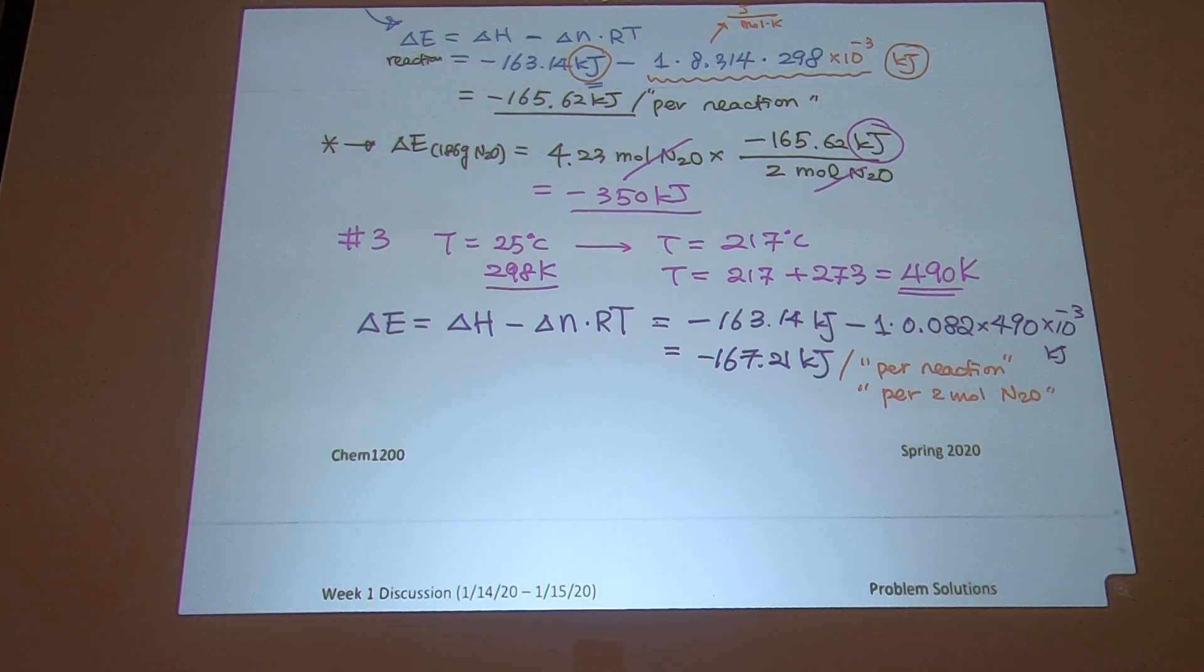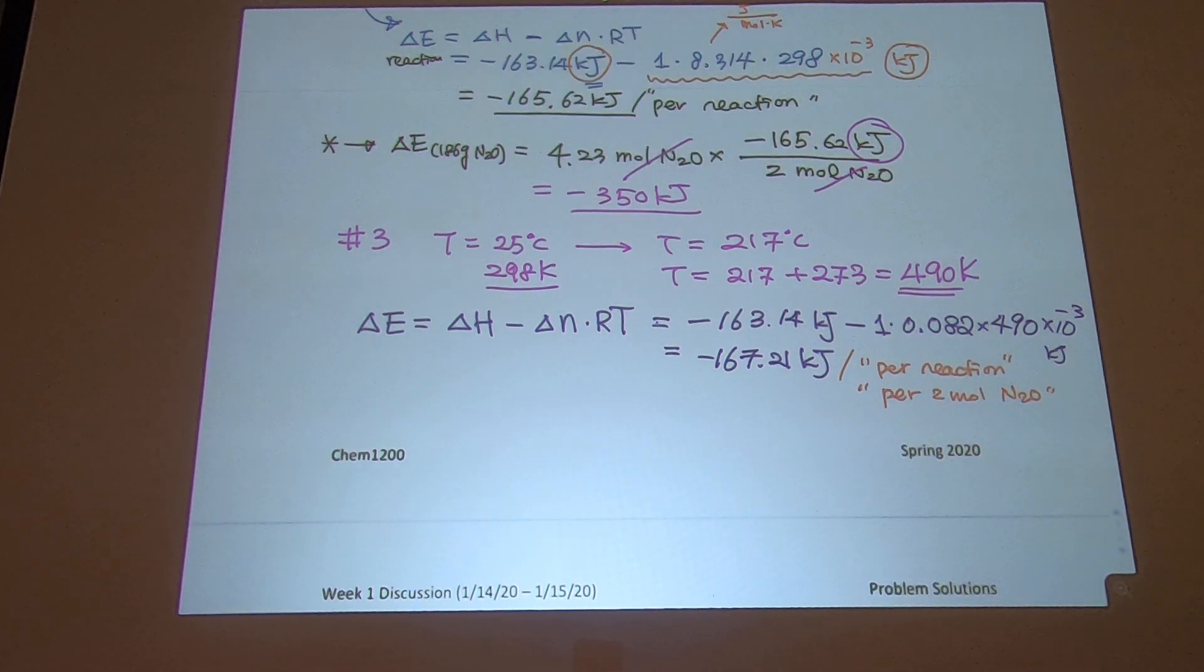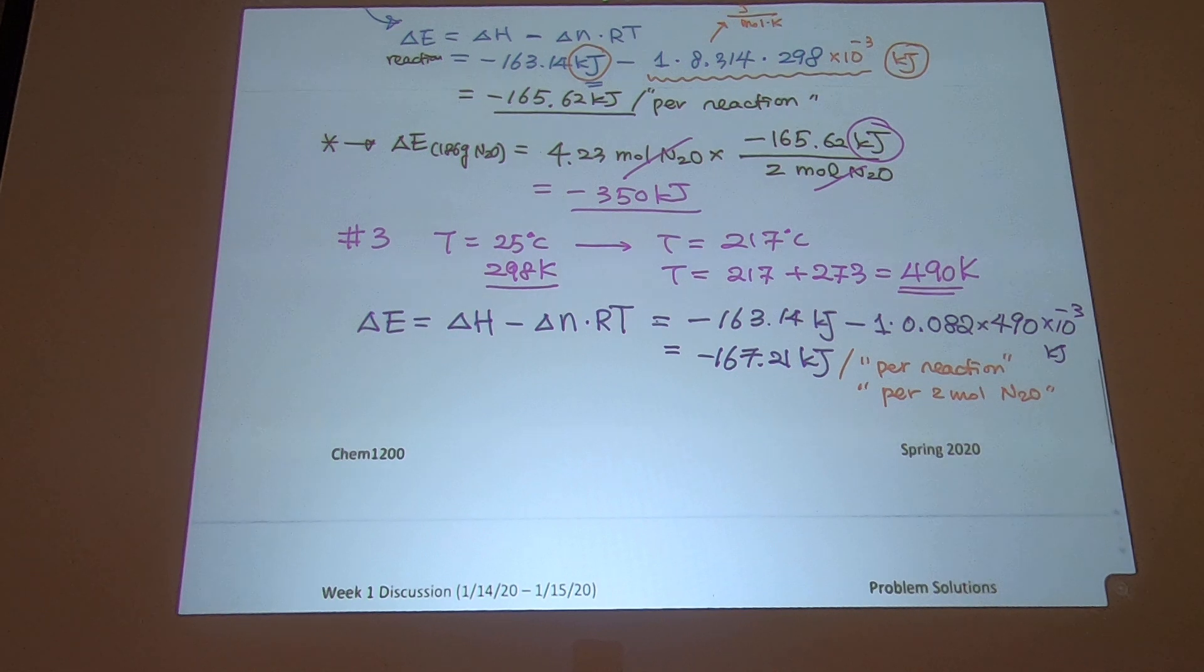So I got that information, and then now what I was asking—I don't know what is Delta E or what was your man—so 186 gram N2O system they want to calculate.